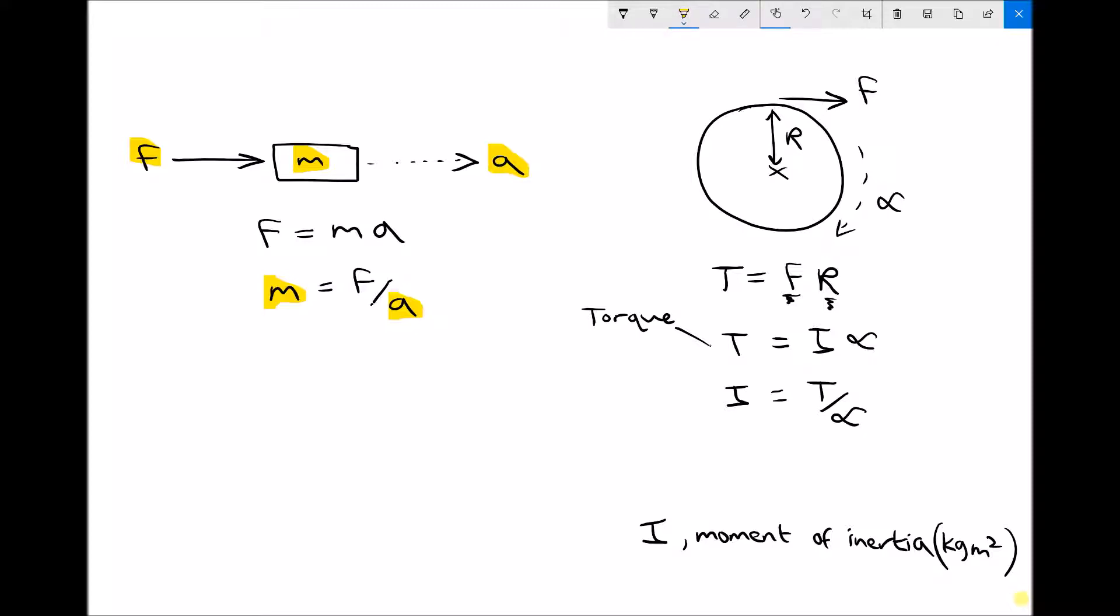Now hopefully you can see that this thing, moment of inertia, is the object's resistance to acceleration. Because if the moment of inertia is higher, then the torque needs to be higher to achieve the same acceleration. Or said a different way, if the moment of inertia is higher, then the acceleration is going to be lower with the same torque.